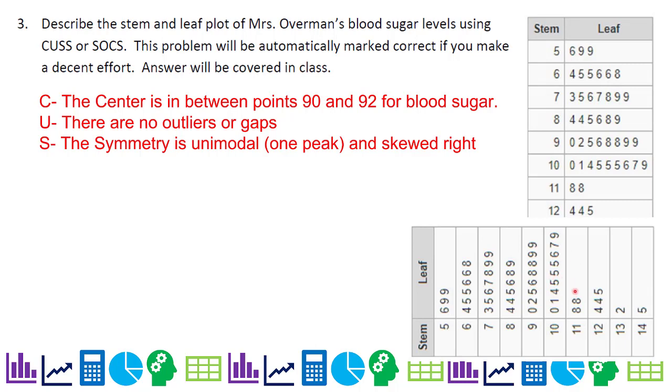Why is it skewed right? If this had been a mound here, it would look symmetrical, but if we tugged on it, like tugging on a thread on a sweater, it would go to the right. So our average is probably higher than our median.